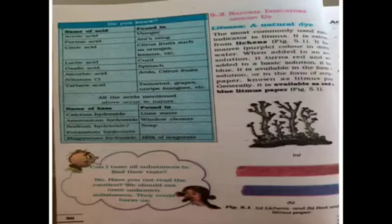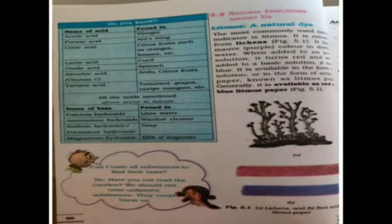Now next page, page number 50. Here in the box — look closely at the picture. In this blue color box, some names of acids are given and names of bases are given, along with which fruits or substances they are found in.